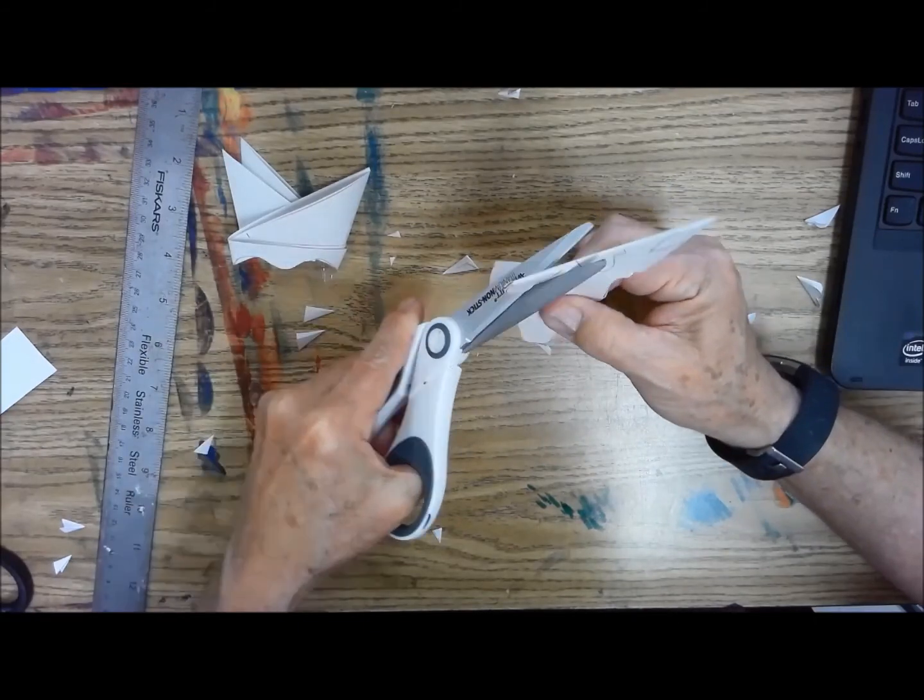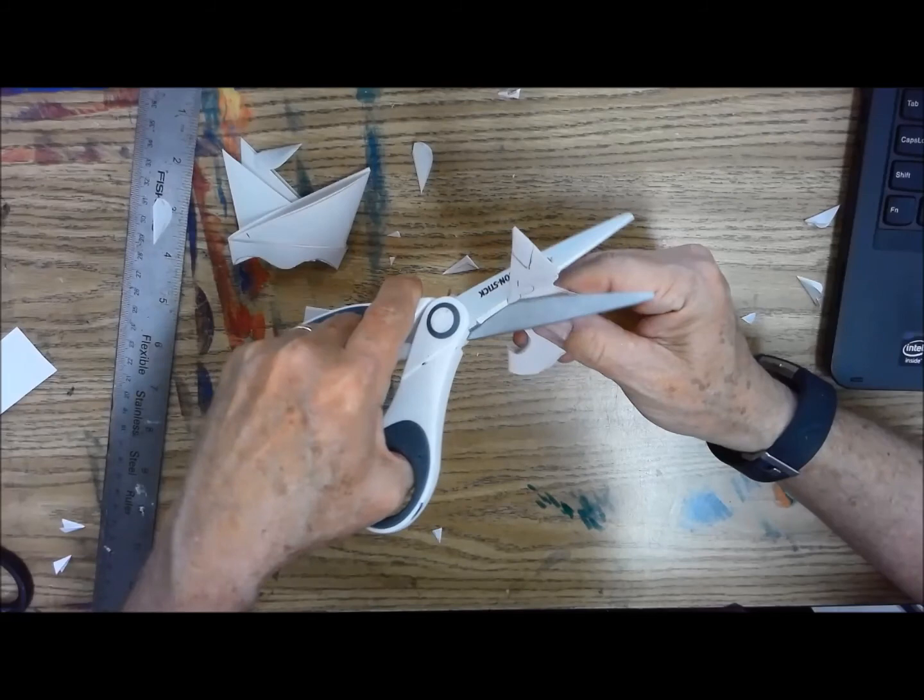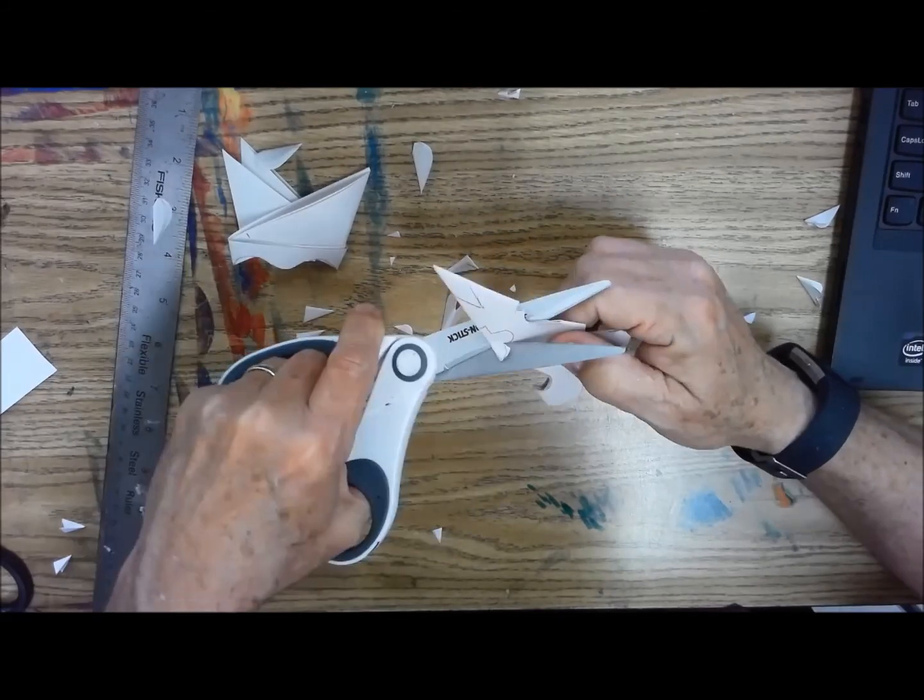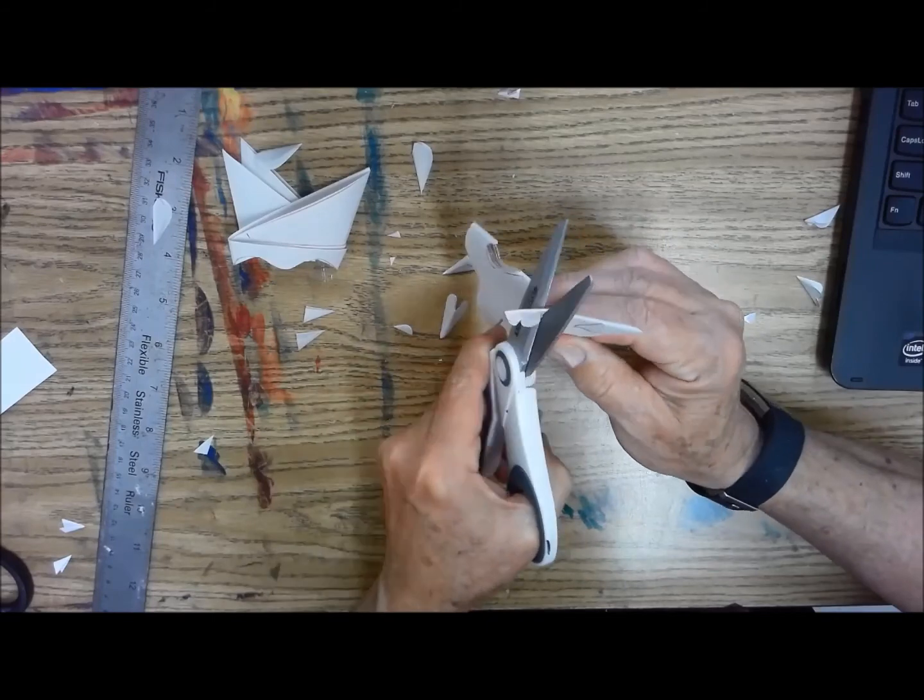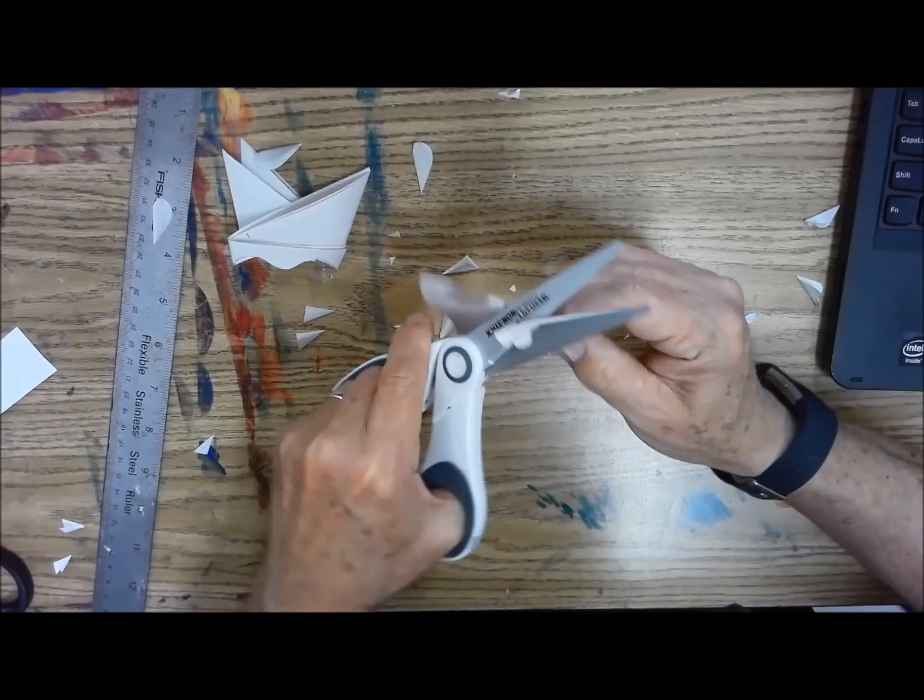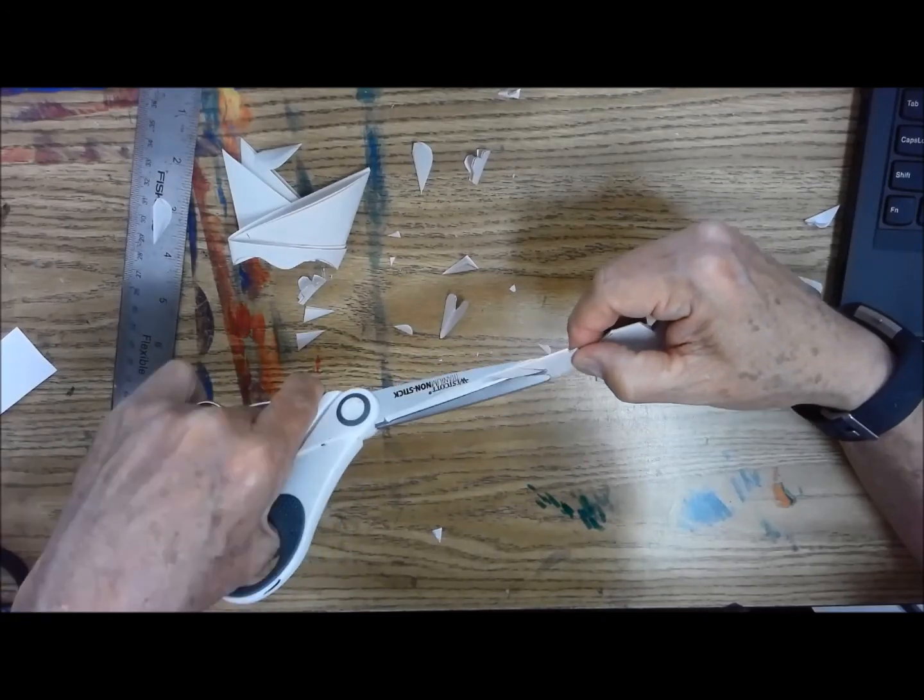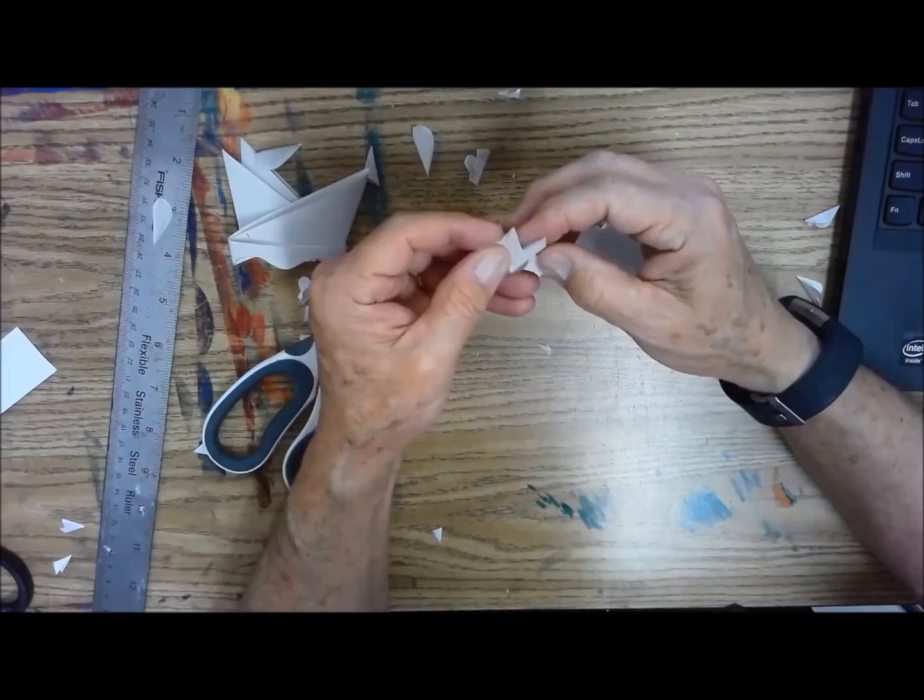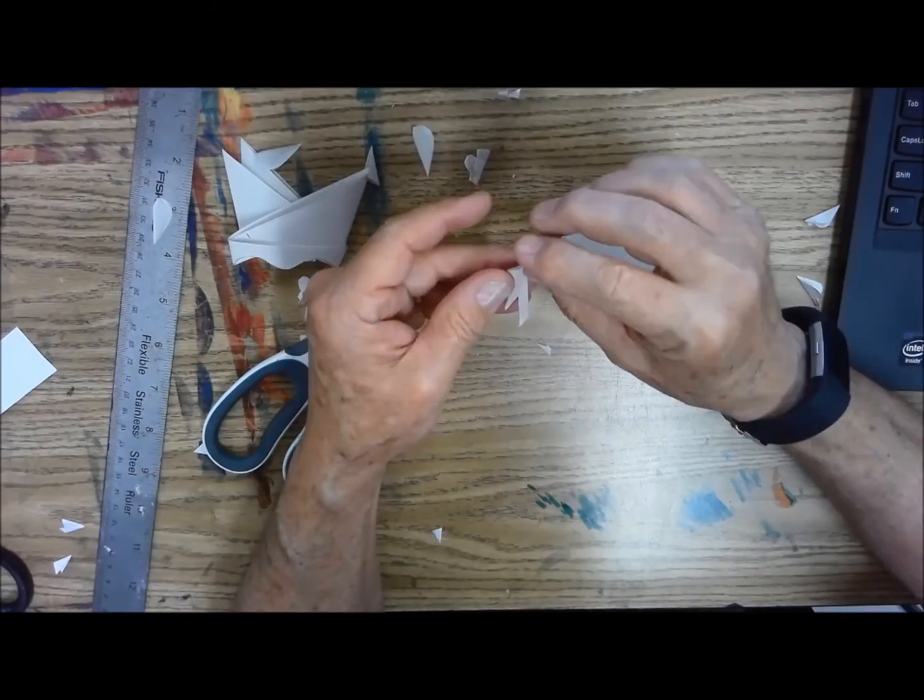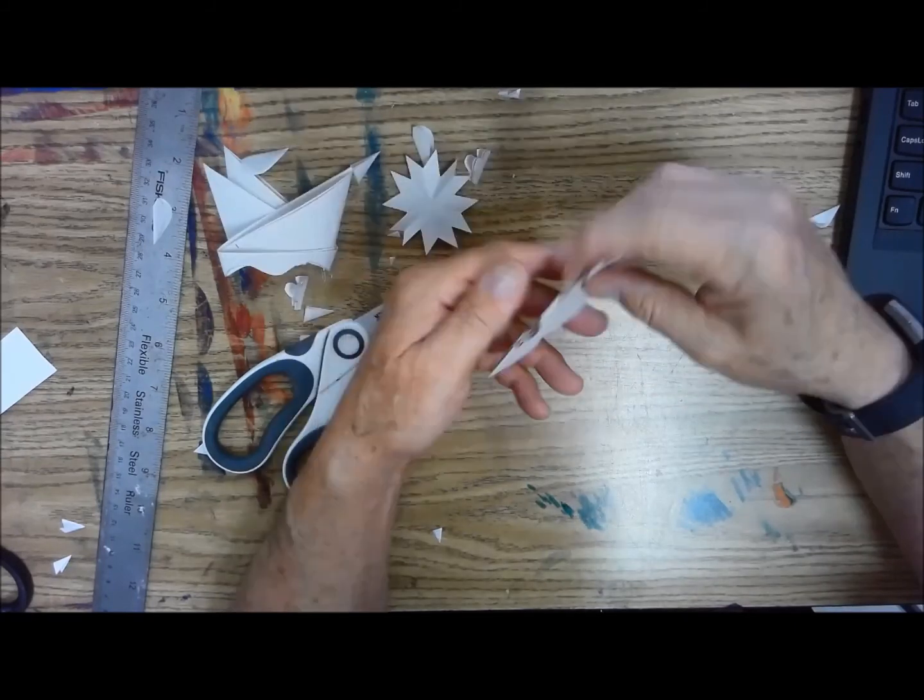Can anybody tell what I'm going to be making on this particular snowflake? Let's see how close you're paying attention. And then I'll get my little star down here. The kids always like that because you can unfold that little piece that I just cut out. And it makes a little teeny tiny one. Okay, so open this up.